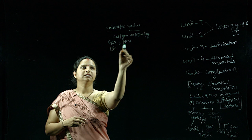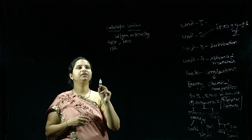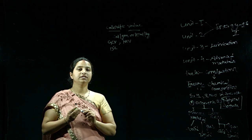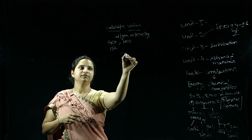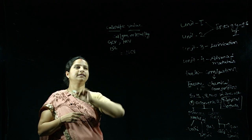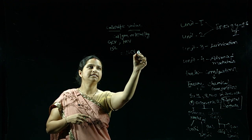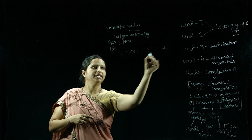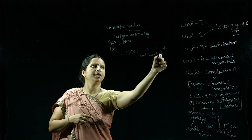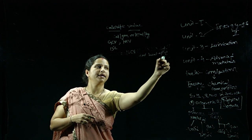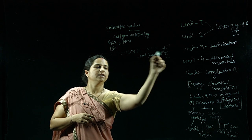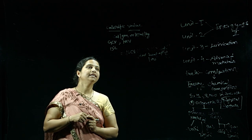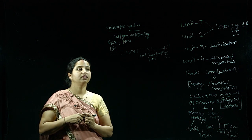After understanding GCV and NCV, what is the relation between them? GCV is related to NCV as follows: GCV = NCV + 9 × H × latent heat of water / 100. That is the relation between GCV and NCV.